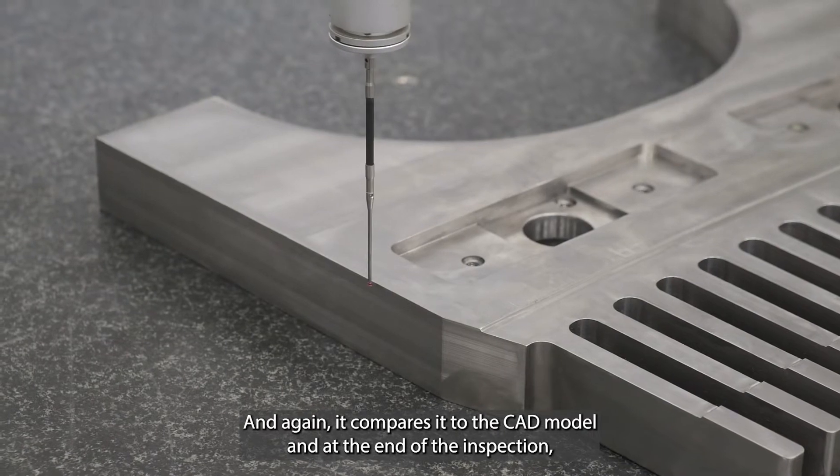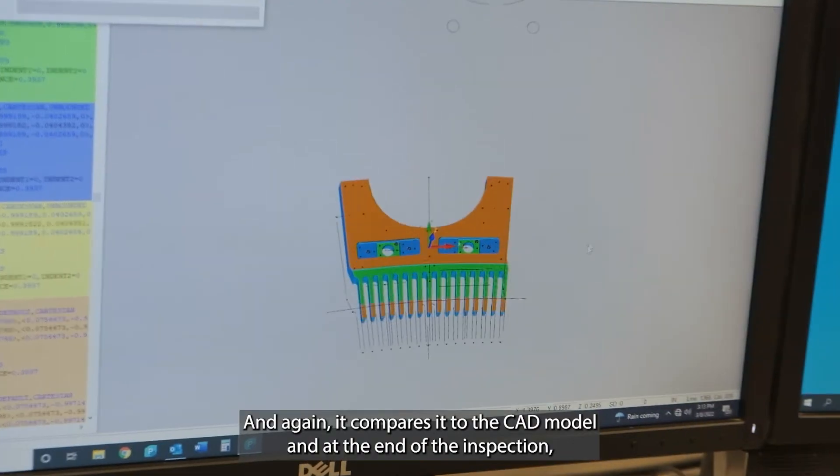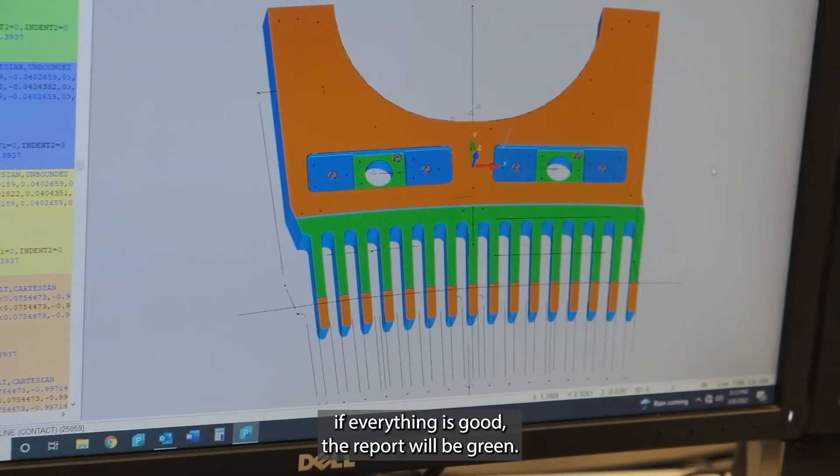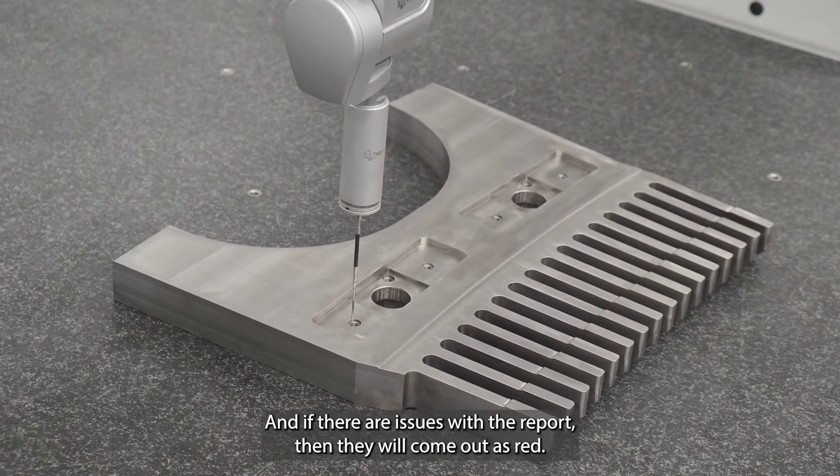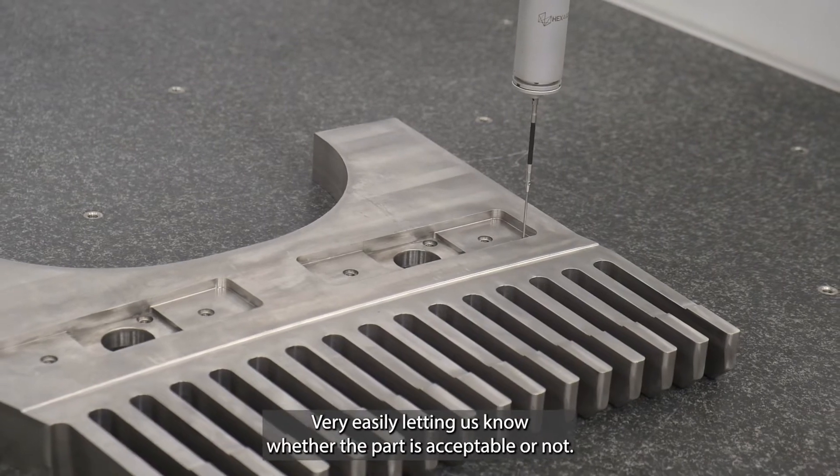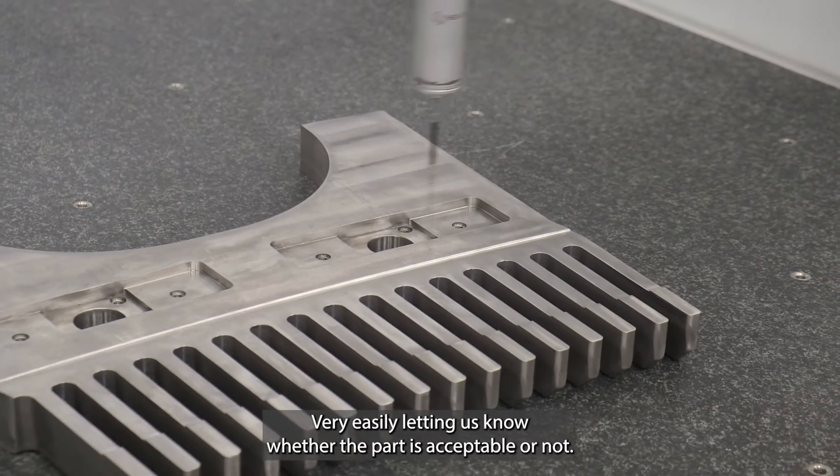At the end of the inspection, if everything is good, the report will be green. If there are issues, they will come out as red, very easily letting us know whether the part is acceptable or not.